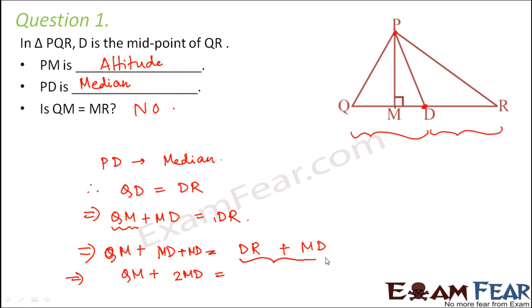So what do we see? We see that QM is equal to MR minus 2MD. So what does this prove? This proves that QM is not equal to MR.